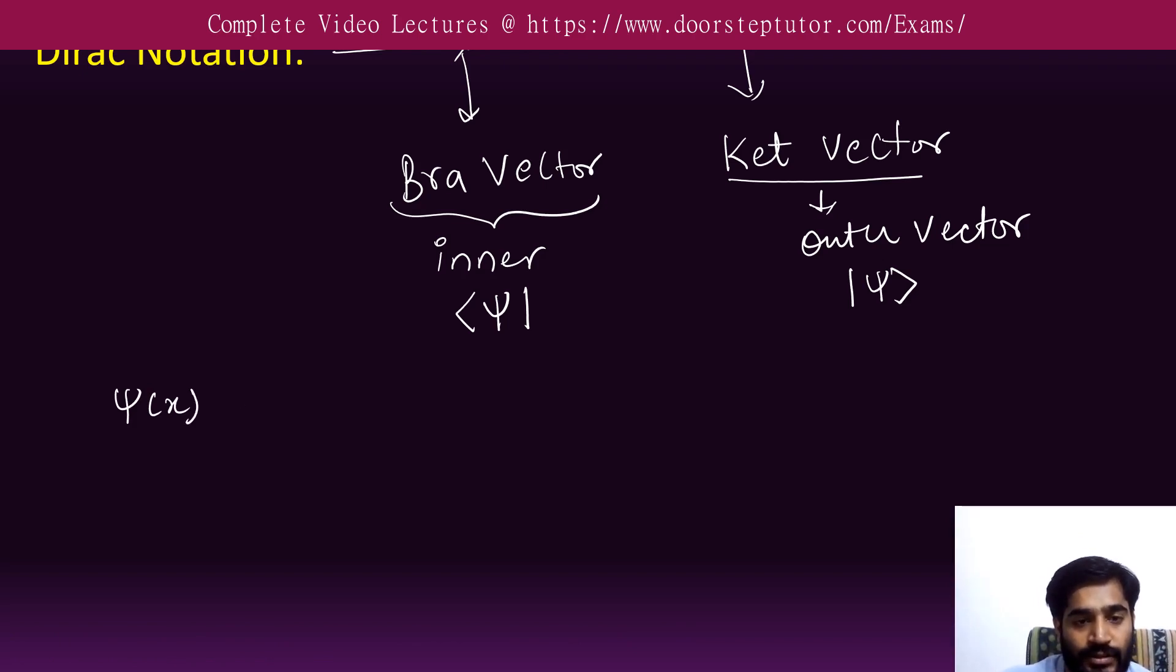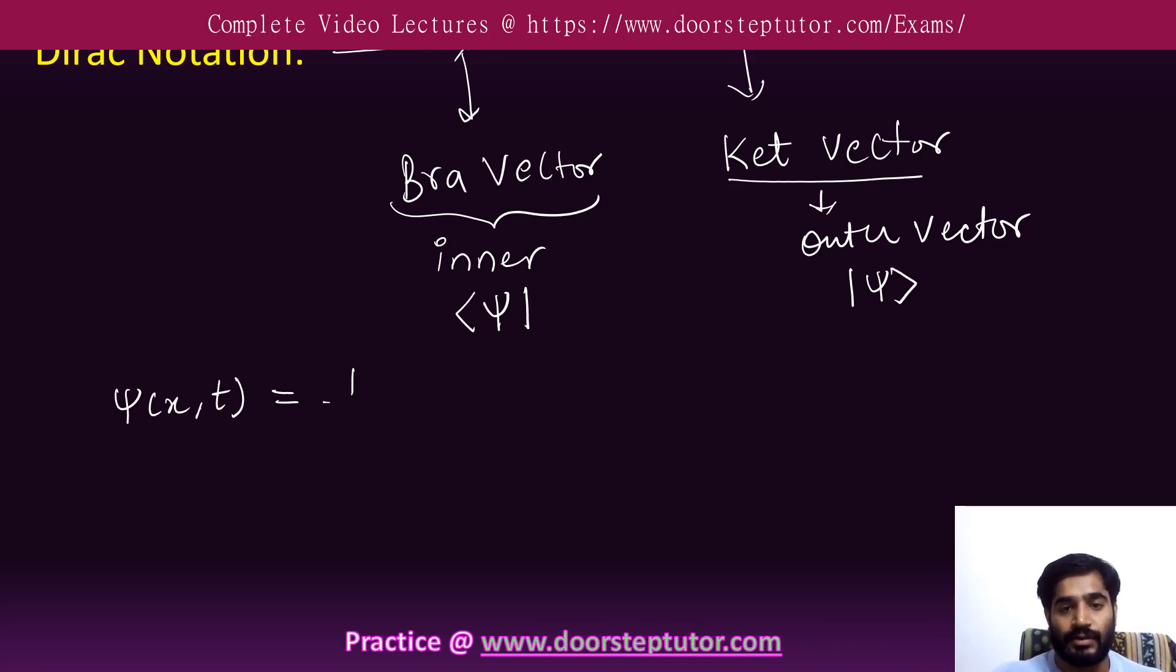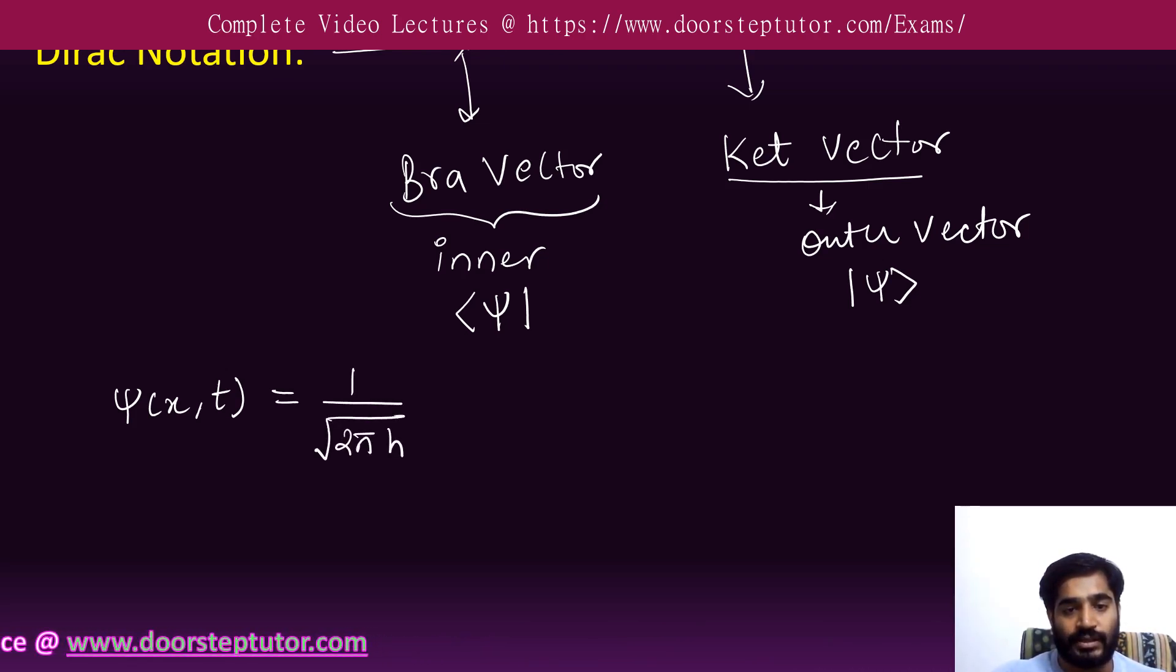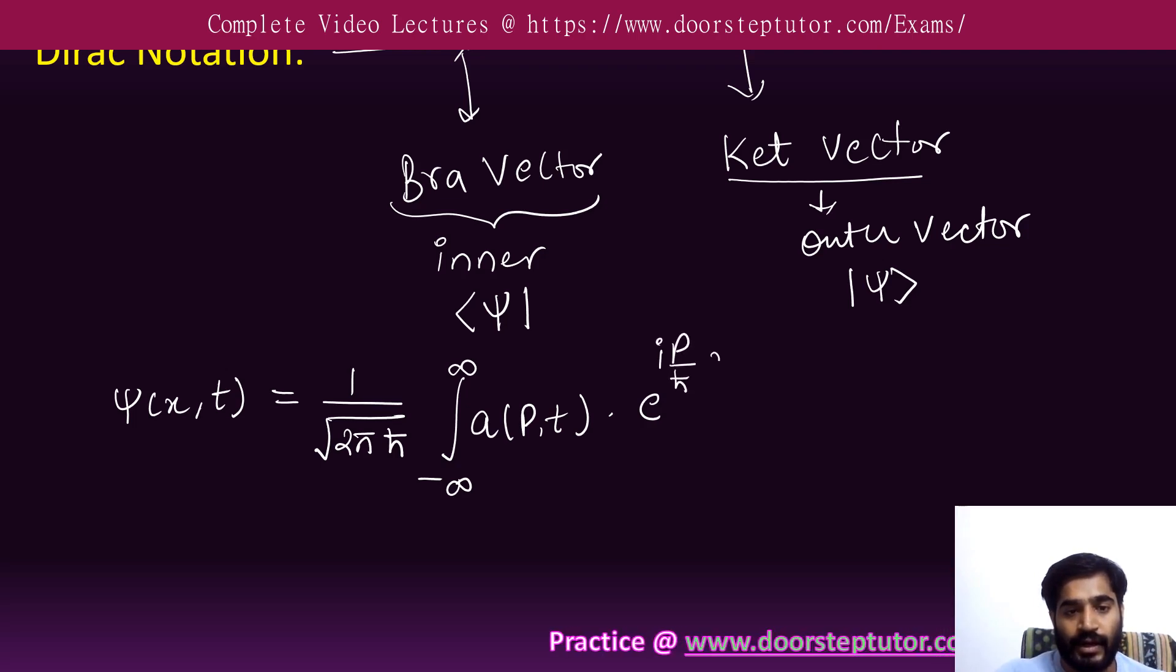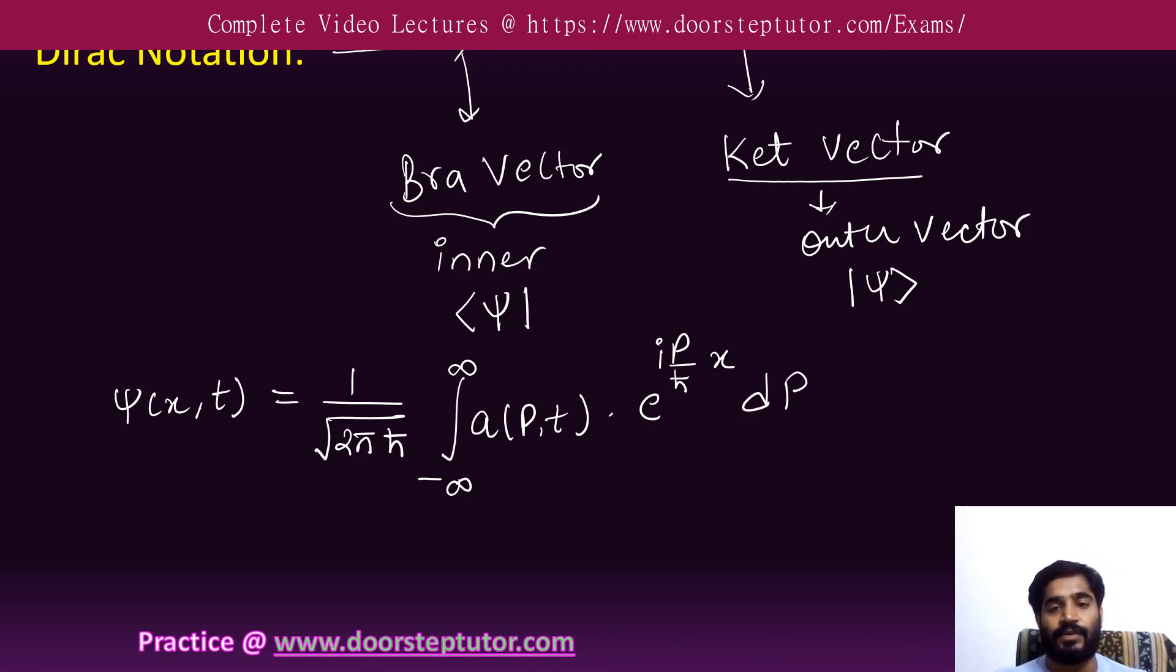Now suppose we have function psi of x, also in terms of x and t. For this there is one over root of 2π h-bar and this is from minus infinity to infinity: a of p of t into e to the power i p by h-bar x dp. This is the psi function.